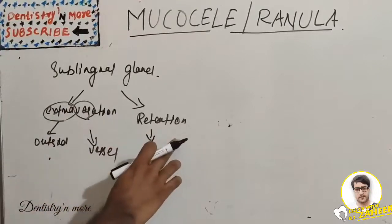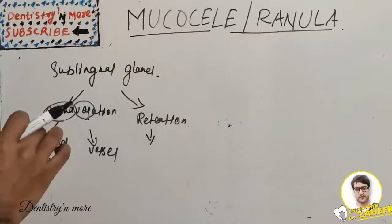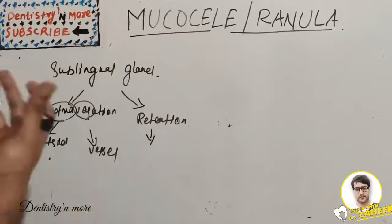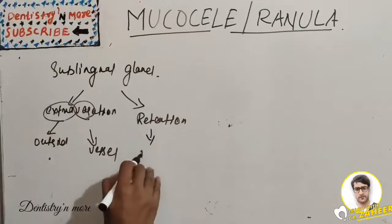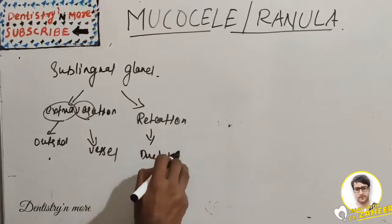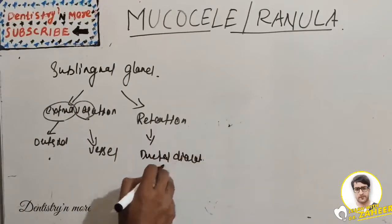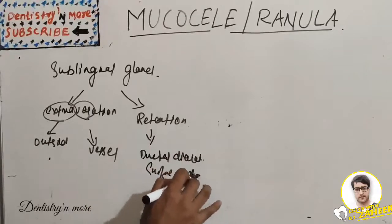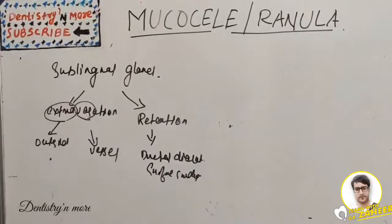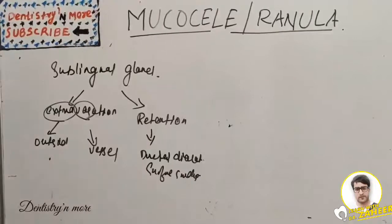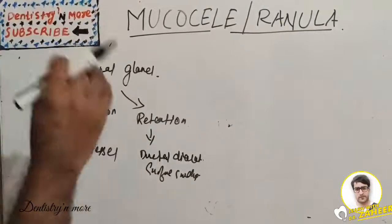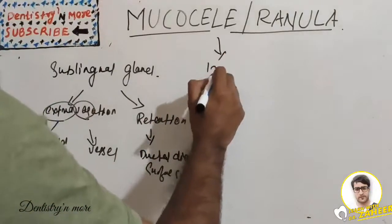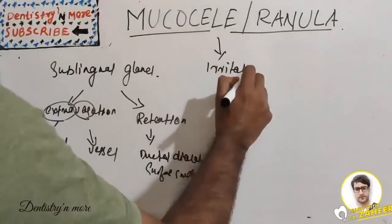Retention happens when the ductal opening is narrowed and cannot adequately accommodate the saliva, leading to ductal dilation and surface swelling. Mucocele, exclusive of the irritation fibroma, is among the most common types of benign soft tissue masses in the oral cavity.